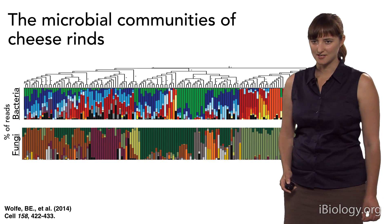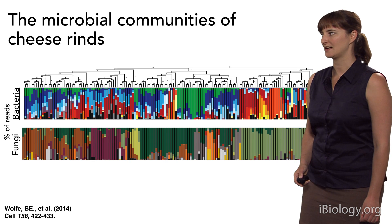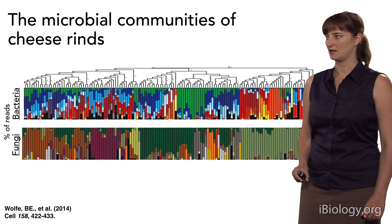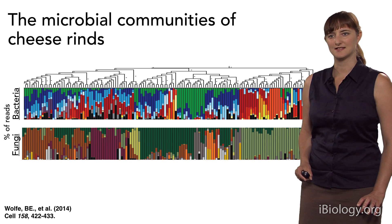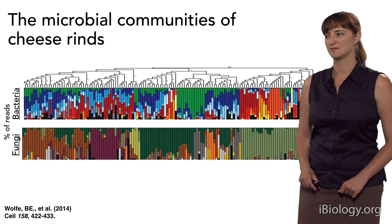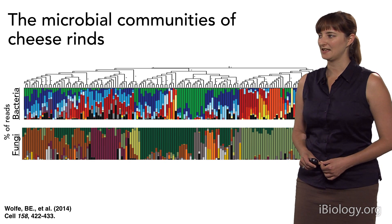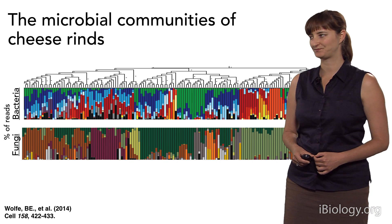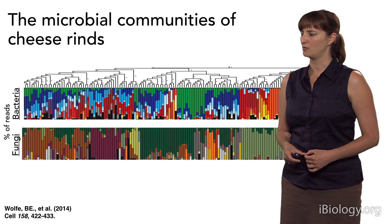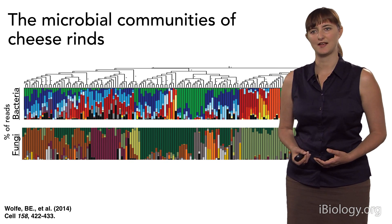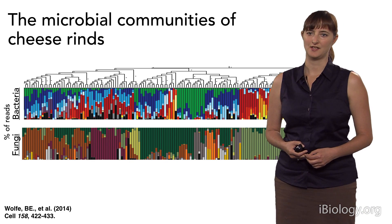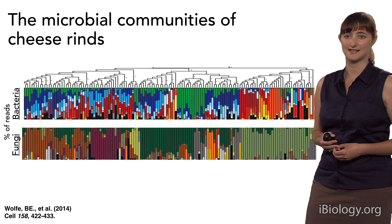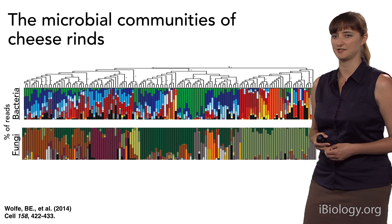This is a representation of the data from this study. We have on the top set of columns the different abundances of bacteria in each of the samples, and the bottom set of columns the different abundances of fungi. Each column is a different type of cheese. We clustered them based on the similarity of species within each community, and you can start to see clusters of cheeses with related communities on this phylogenetic tree.